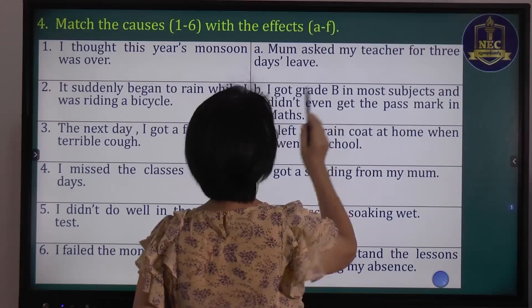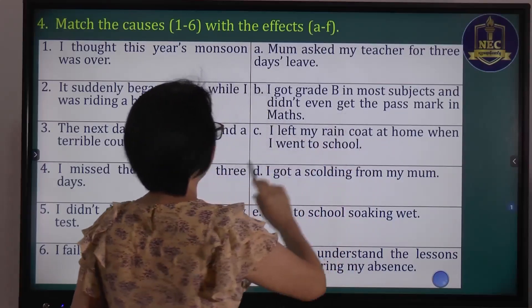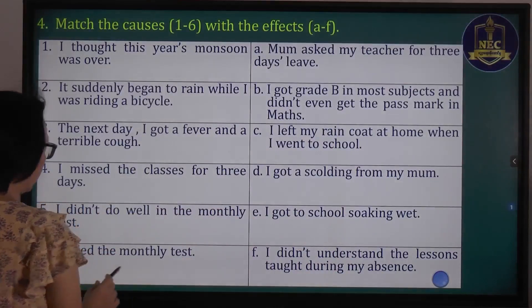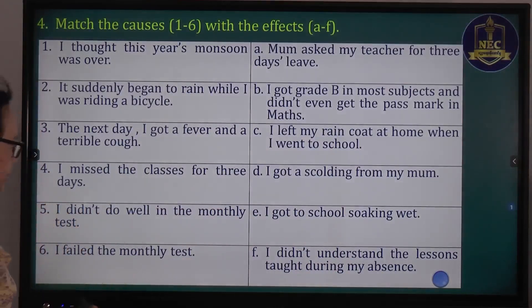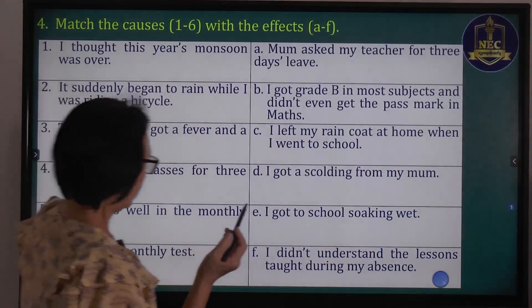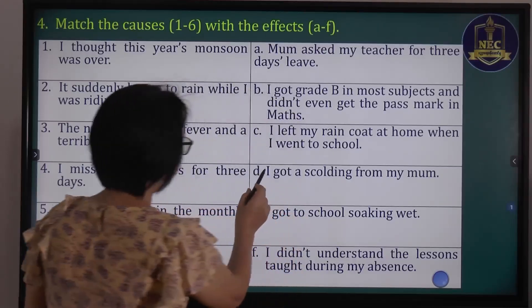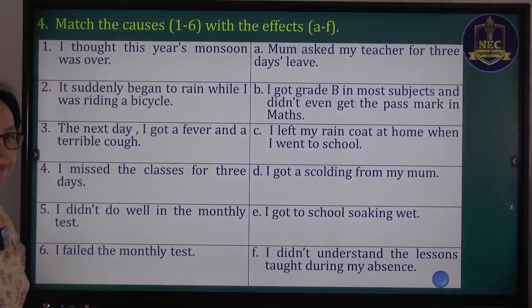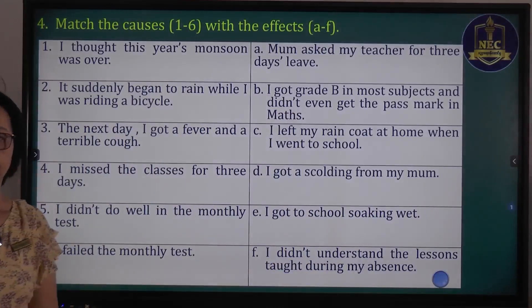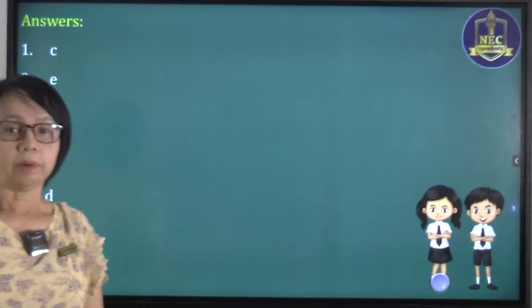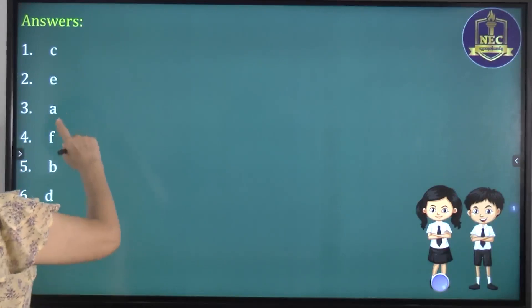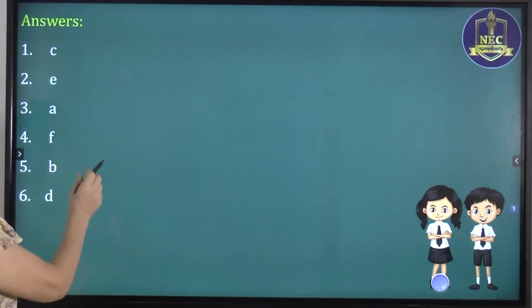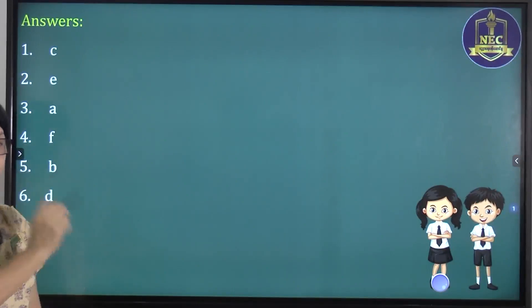Number 6: I failed the monthly test — D: I got a scolding from my mom. Answers: 1-C, 2-E, 3-A, 4-F, 5-B, 6-D.